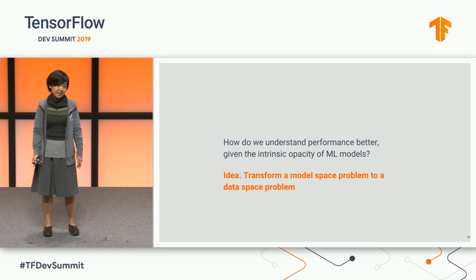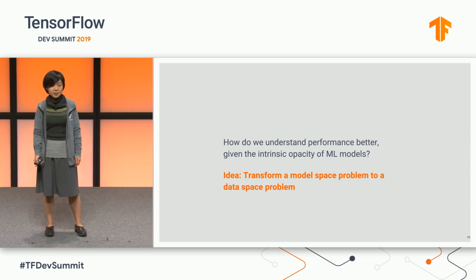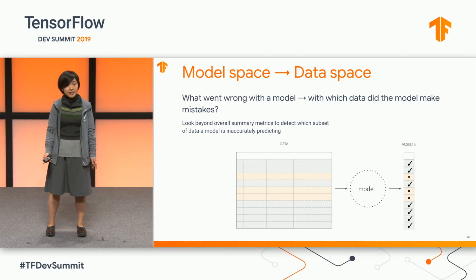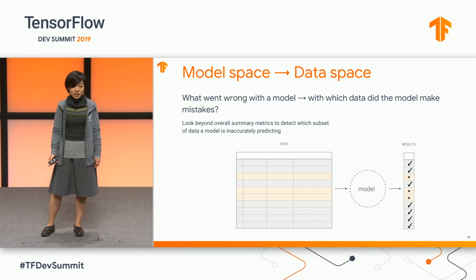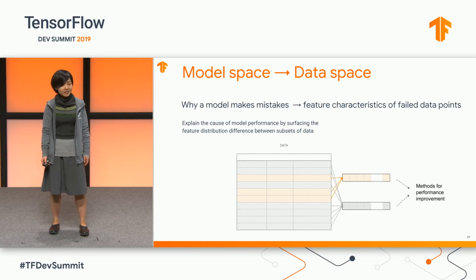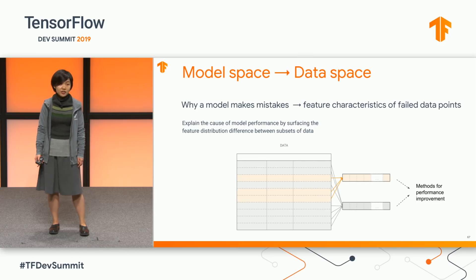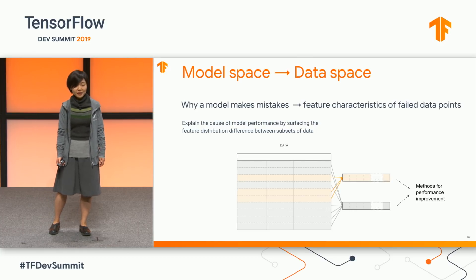The idea is that we can transform a model-space problem into a data-space problem. Instead of asking what went wrong with a model, we look at on which data did this model make mistakes. And instead of asking why a model makes certain mistakes, we look into the feature characteristics of these failed data points.